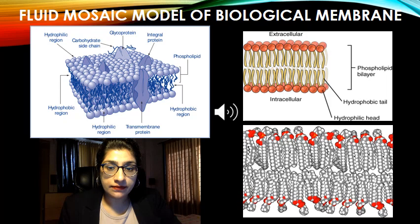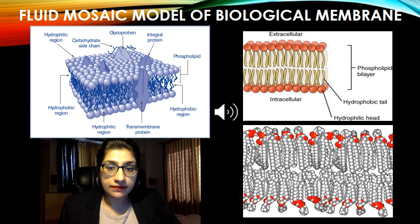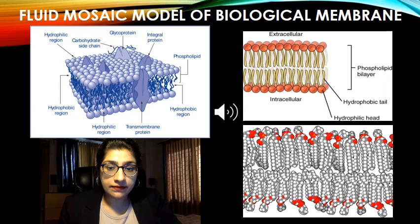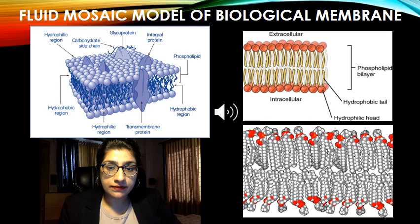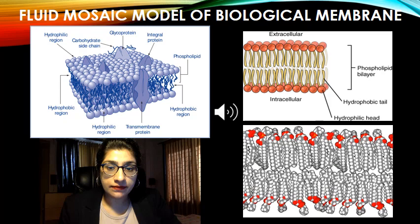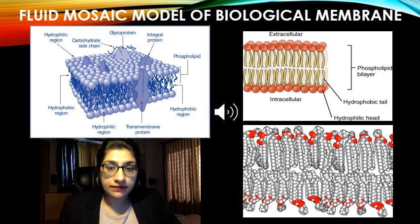Let me describe briefly about the fluid mosaic model of the biological membrane. It is shown in the diagram on the left-hand side upper diagram. The fluid mosaic model was first proposed by Singer and Nicholson back in 1972 to describe the structure of cell membranes.